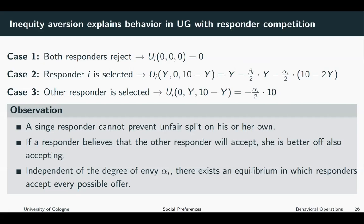In this ultimatum game with responder competition, competition implies that very unequal outcomes can be achieved by the same responders that would reject low offers in the standard ultimatum game. So the inequity aversion model can explain — at least qualitatively — behavior in the ultimatum game, behavior in the gift exchange game, and also behavior in the ultimatum game with responder competition.